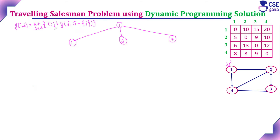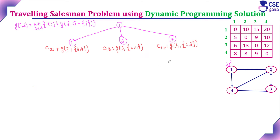If he is visiting vertex 2, we implement: c(1,2) — cost to travel from 1 to 2 — plus g(2, {3,4}), the cost to visit the remaining vertices 3 and 4. Similarly, c(1,3) plus g(3, {2,4}) for visiting vertex 3 first, and c(1,4) plus g(4, {2,3}) for visiting vertex 4 first. The costs are: c(1,2)=10, c(1,3)=15, c(1,4)=20.